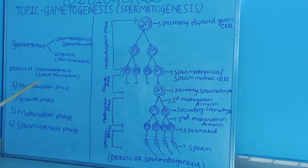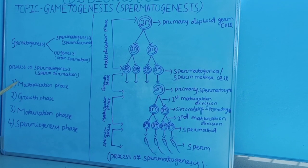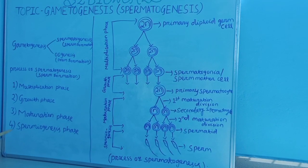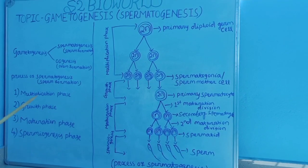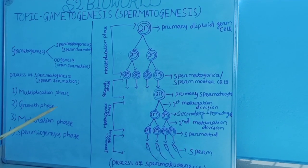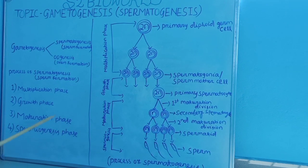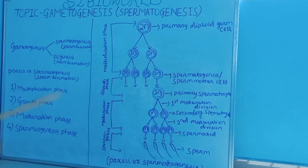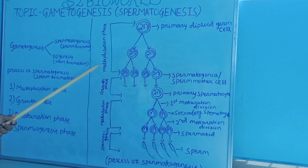The process of Spermatogenesis mainly consists of four phases: multiplication phase, growth phase, maturation phase, and Spermiogenesis phase.